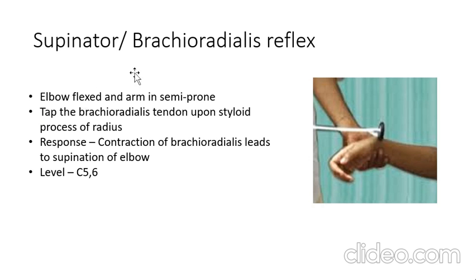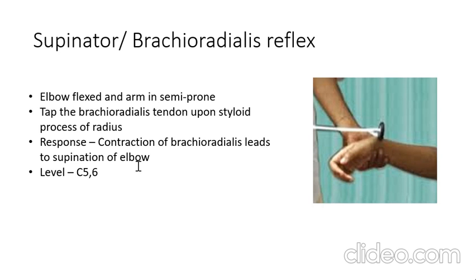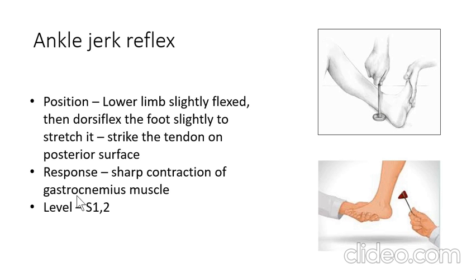Next is the brachioradialis reflex, also called the supinator reflex. The elbow is slightly flexed and the arm is in semi-prone position. Tap the brachioradialis tendon; the response is contraction of brachioradialis resulting in supination. The level is C5-C6.